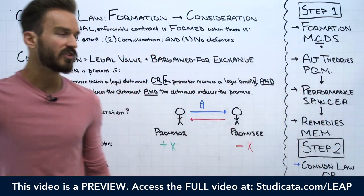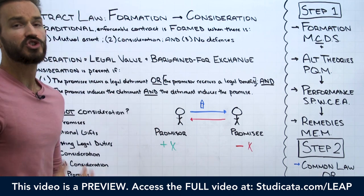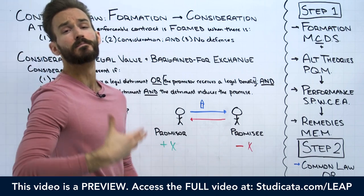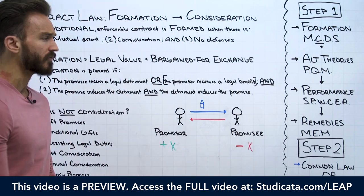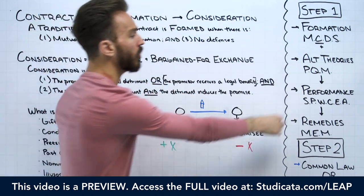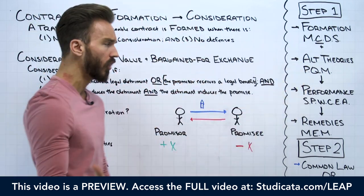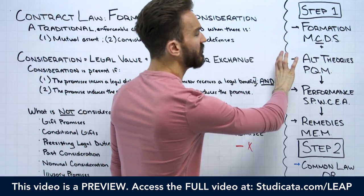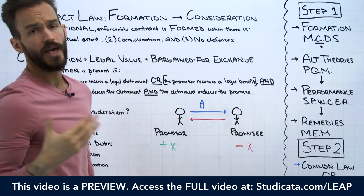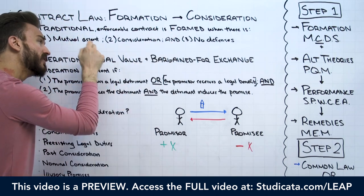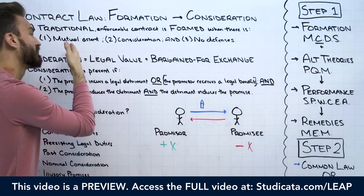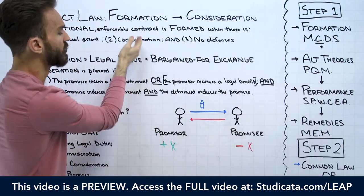I offer to give you this dry erase marker for free, you say 'I accept.' We might have mutual assent — offer and acceptance — but we do not have consideration. That agreement is not supported by consideration; therefore, we do not have a traditional enforceable contract. That's a gift promise. As we've talked about before, just because you don't have a traditional enforceable contract doesn't mean it's impossible for the plaintiff to recover.